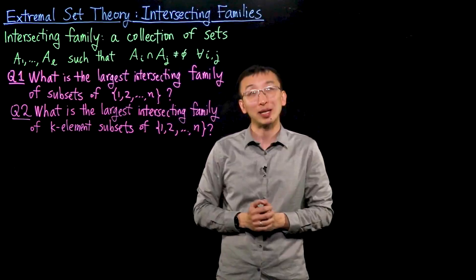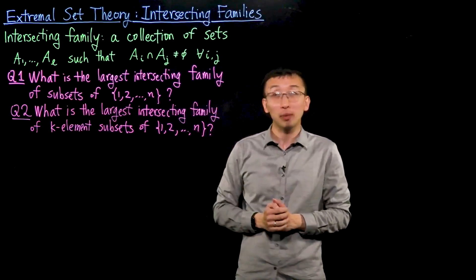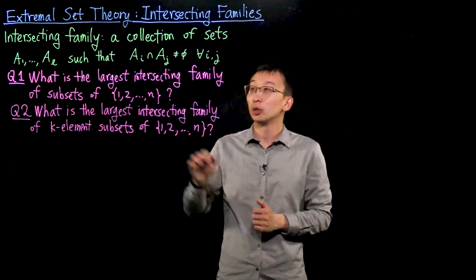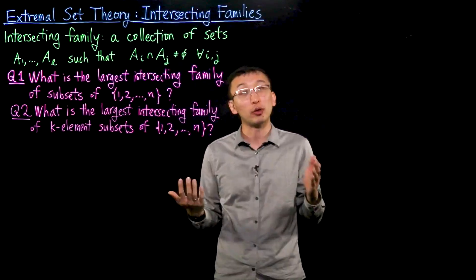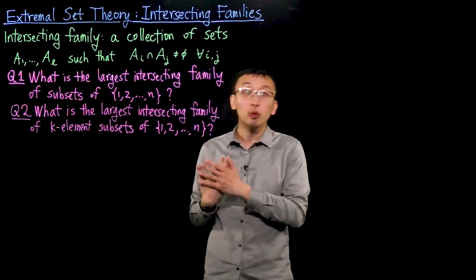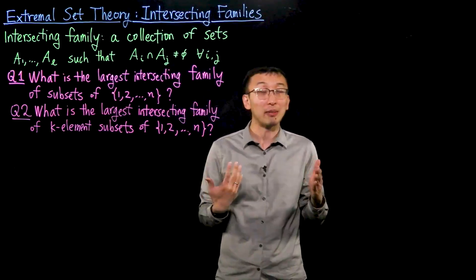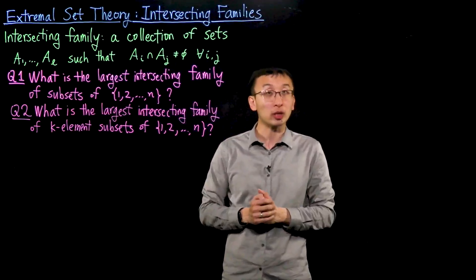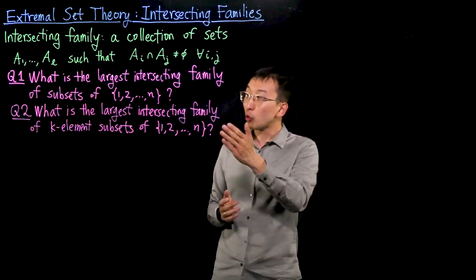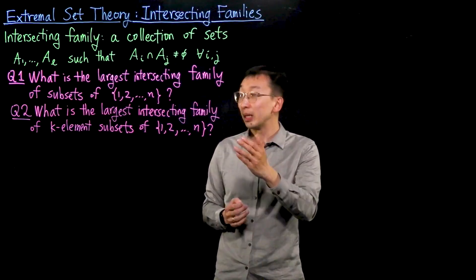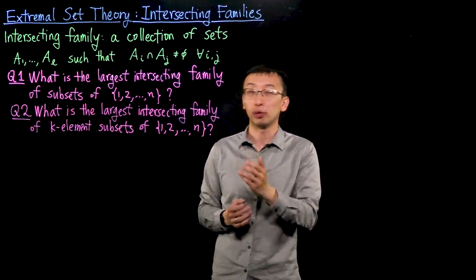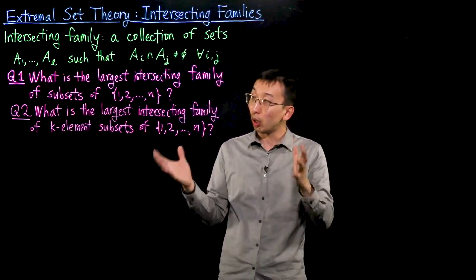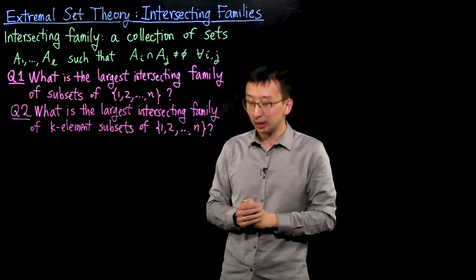Here are two basic questions one can ask. The first, which will turn out to be an easy warm-up, is: what is the largest intersecting family of subsets of {1, …, N}? There are in total 2^N subsets of {1, …, N}, but if we only keep a collection that forms an intersecting family, what is the largest family we can get? The second question, which involves an application of the probabilistic method, is: what is the largest intersecting family of K-element subsets of {1, …, N}?